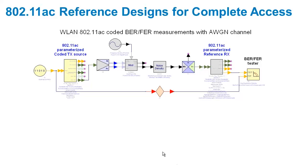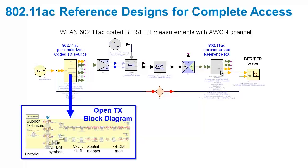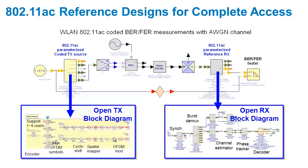With SystemVue, you have the freedom to create a complete signal generation scenario. Here we have a bit sequence in through a coded transmit source, through some channel modeling, through a coded receiver, and bits come out and they're compared for bit error rate. If I open up this coded source and the receiver, I can see that I have access to the internal block diagrams.